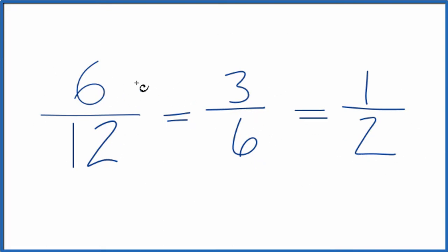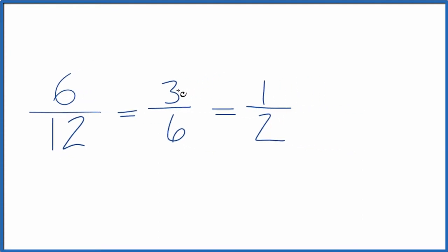In all of these, six divided by twelve, three divided by six, or one divided by two, you get 0.5 because they're all equivalent. They have the same value, they're just written differently.